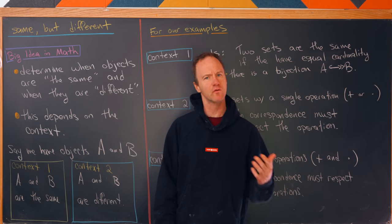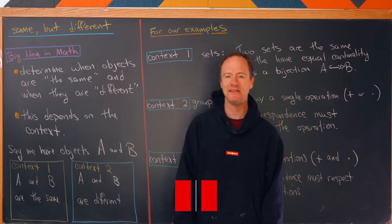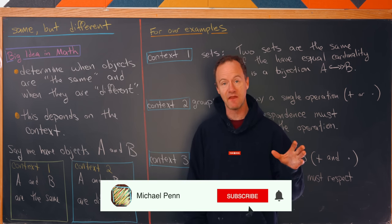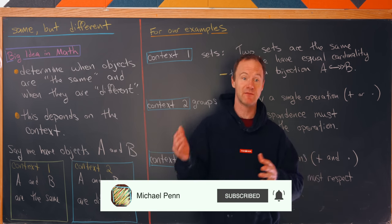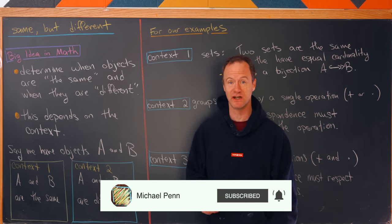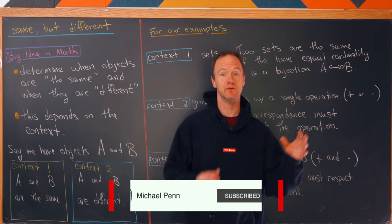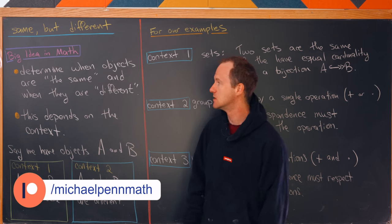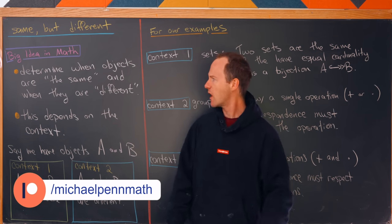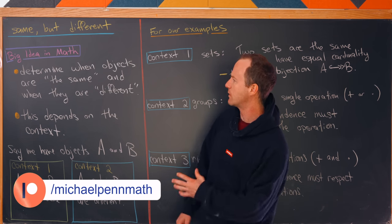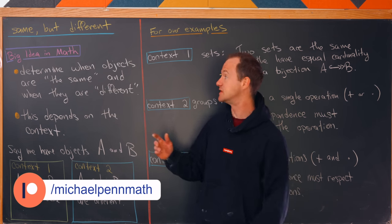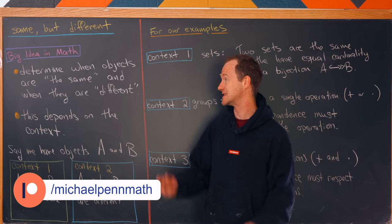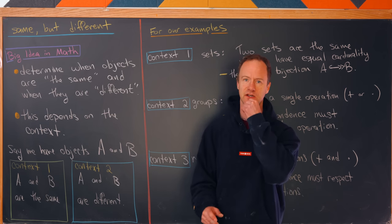Today we're going to talk about a really big idea in mathematics: sorting mathematical objects into sameness and differentness. In other words, what we'd like to determine is, given any two objects, when they are the same and when they are different.